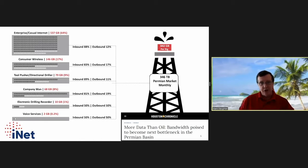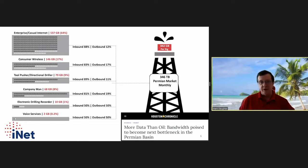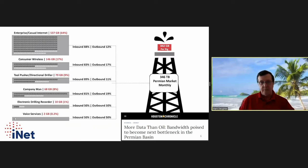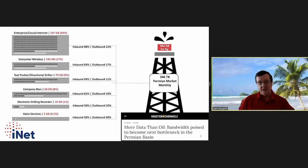In terms of how the data is used, most of it — about two thirds — is enterprise connectivity. That includes casual internet, crew Wi-Fi services, and enterprise-level connectivity. We also provide separate carriers to the company man and tool pusher for voice services, because no matter where you are, people want to be able to speak to field offices and headquarters.